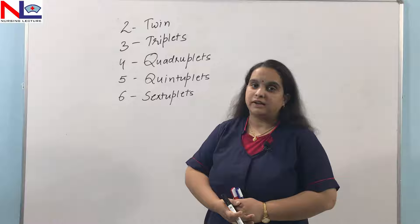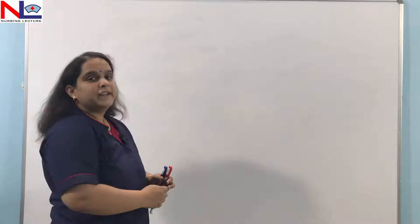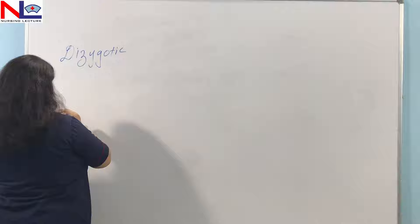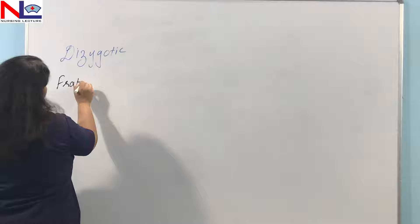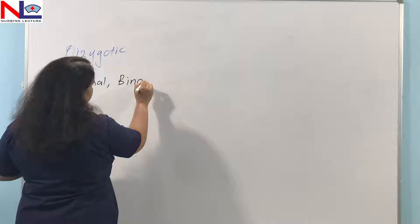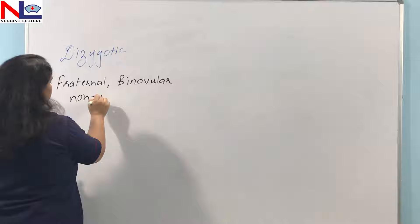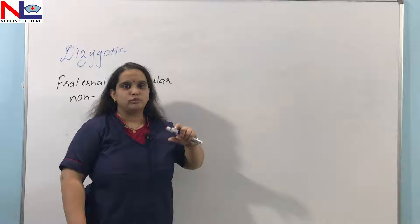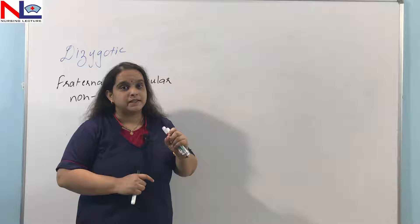In twin pregnancy, there are two varieties. The first is the dizygotic twin, also called fraternal twin, binovular twin, or non-identical twin. Dizygotic means two ova are released — from one ovary or from both ovaries — each fertilized by a separate sperm at the same time in a single menstrual cycle.